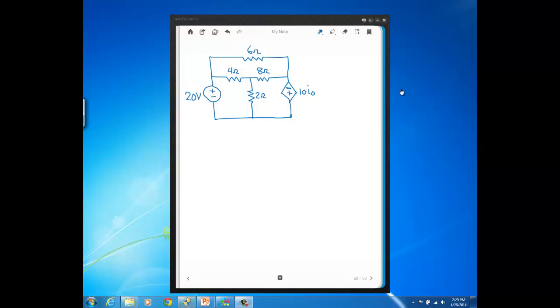In this video we solve another circuit using mesh current method. In this circuit we have voltage sources, but one of those voltage sources is a dependent voltage source.